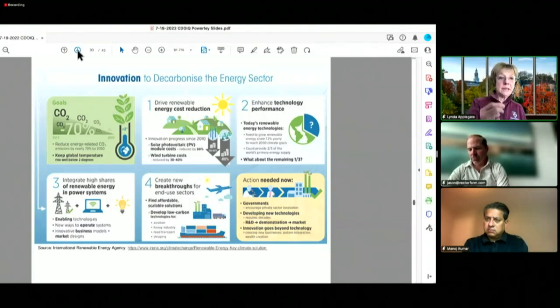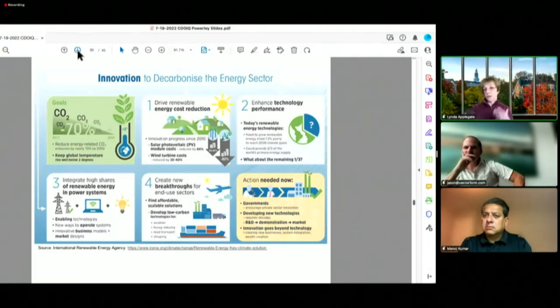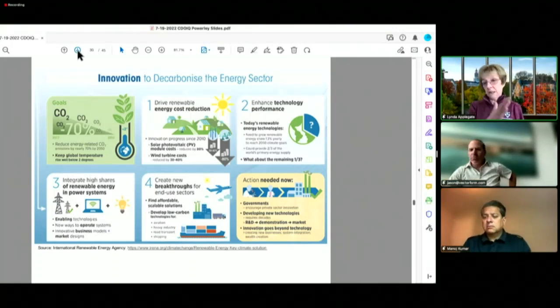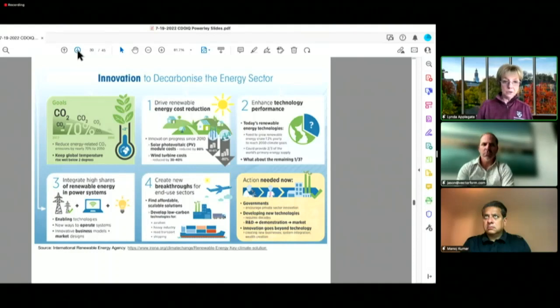Some of the goals is to keep the global temperature rise well below two degrees. That's being done by driving renewable energy cost reduction, how we can think about having a grid that provides renewable energy as a feature and as something that you can select into much more easily. I showed you how slow we've been at being able to move towards renewables.